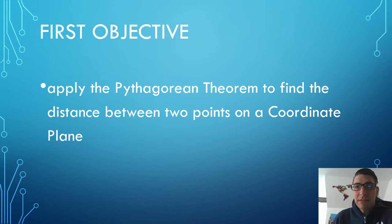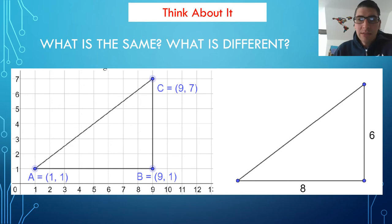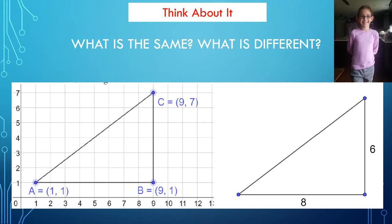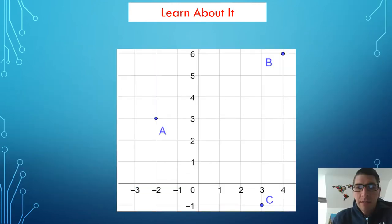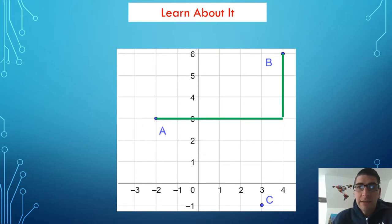Our first objective is to apply the Pythagorean theorem to find the distance between two points on a coordinate plane. Let's think about what's the same and what's different about these two triangles. To find the distance from A to B, it would be helpful to have a right triangle so we could use the Pythagorean theorem. These points are on the coordinate plane, so we can find a vertical distance and a horizontal distance between A and B, and then that would make the distance from A to B the hypotenuse of that right triangle.